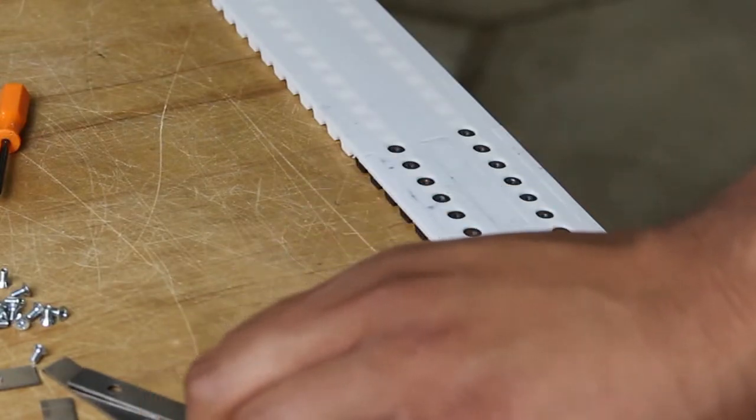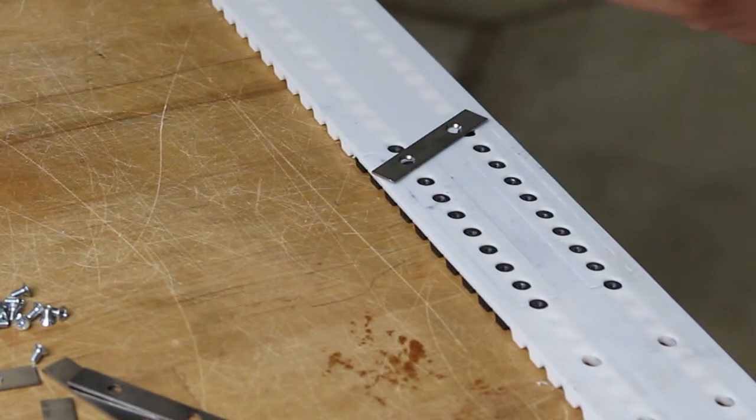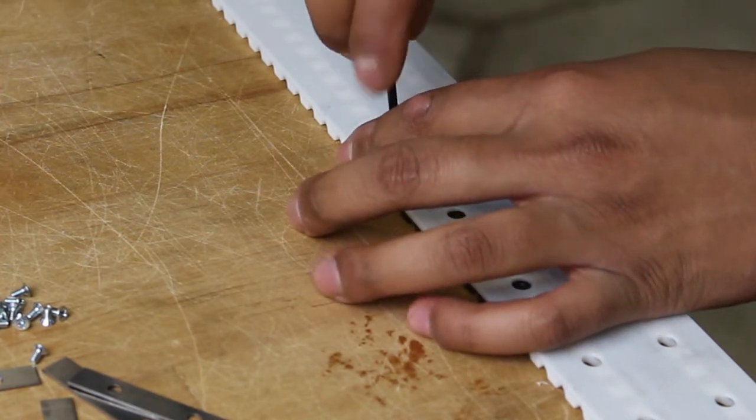Now, take one flat metal plate and two of the small screws provided, and using a small Phillips head screwdriver, drive the screws into the belt.